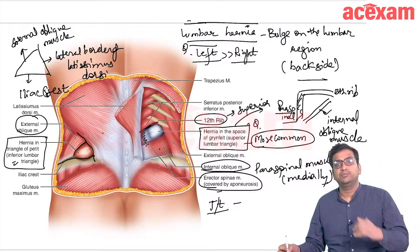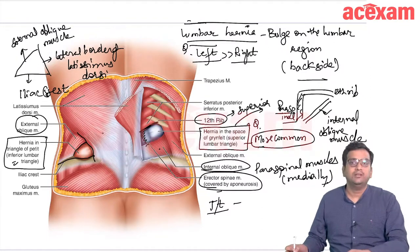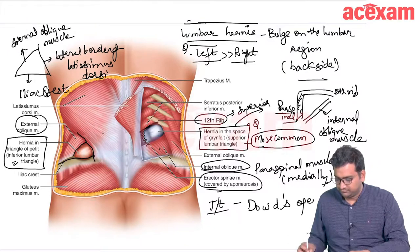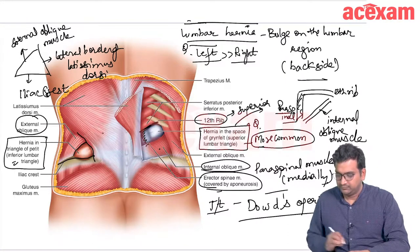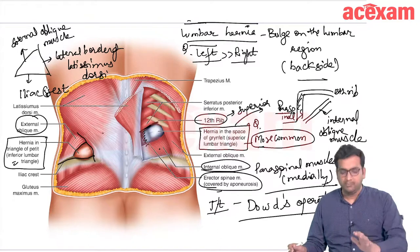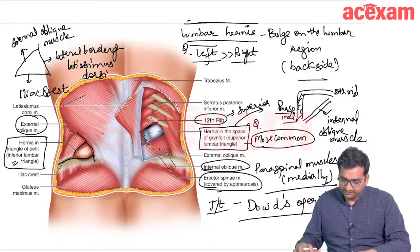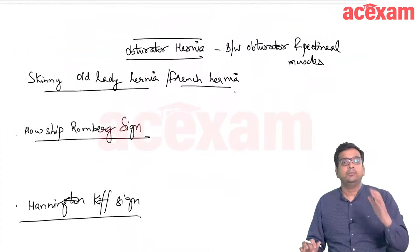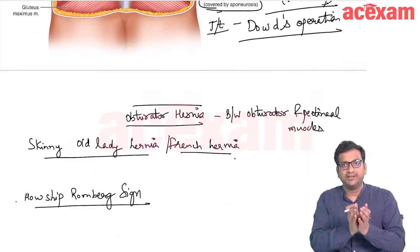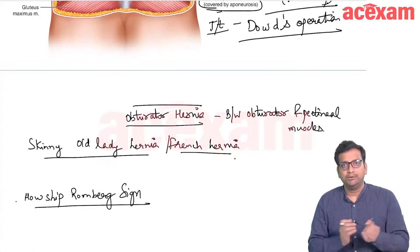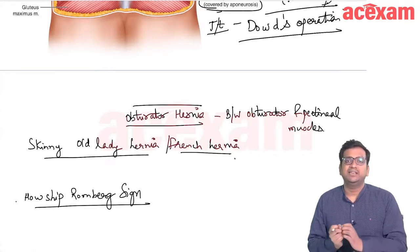Hernia occurs more commonly from the superior lumbar triangle. Treatment is Daud's operation. The next topic is obturator hernia — a hernia occurring between the obturator and pectineal muscles, compressing the obturator nerve.